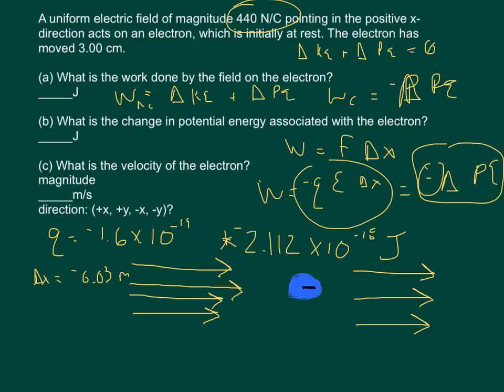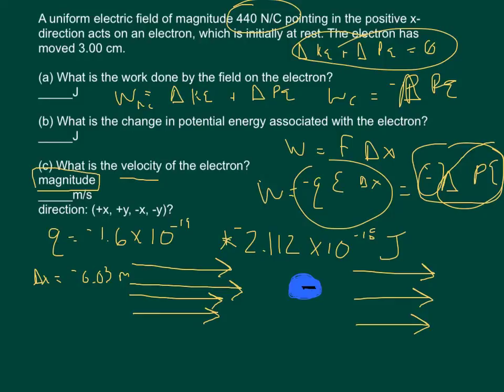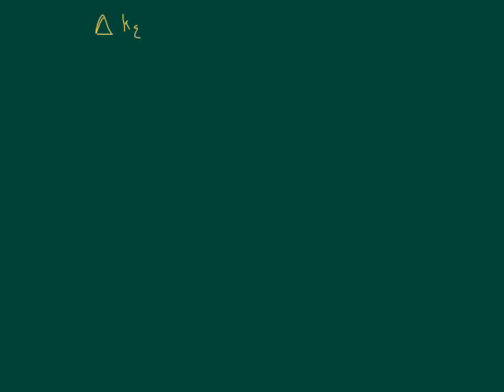For part C, we need to find the velocity. We use the principle that the change in kinetic energy plus the change in potential energy equals zero. We know the change in potential energy is negative 2.112 times 10 to the negative 18th. But since the problem asks for the magnitude, we can work with the positive value. This is the conservation of energy equation for conservative forces.